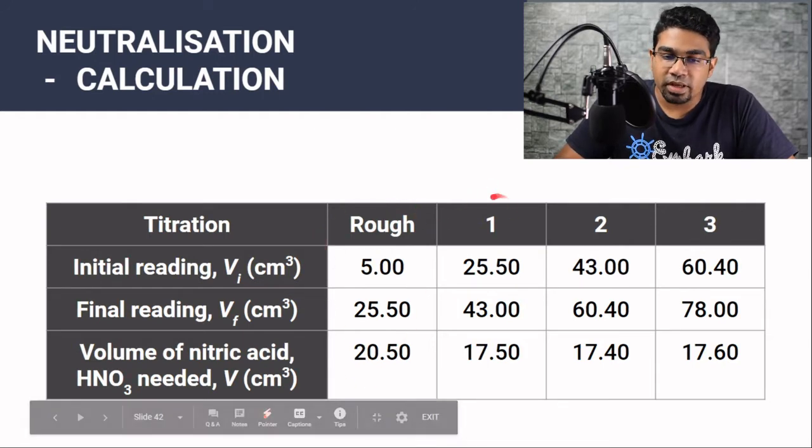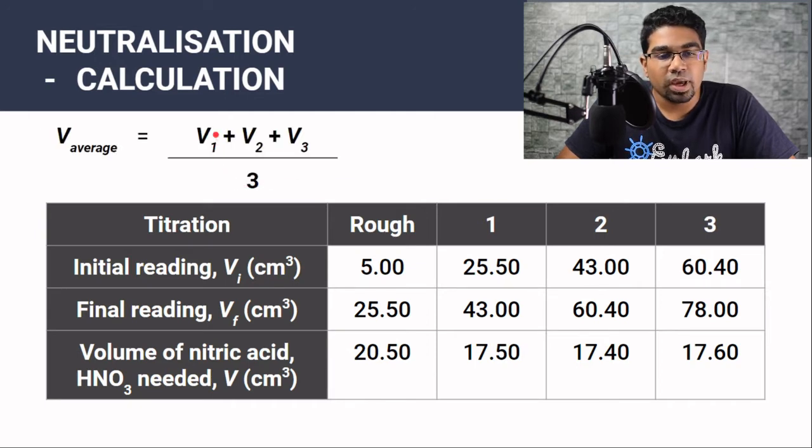Then we have the actual titration. We have three times titration. So when we use the volume of acid that is needed to react completely with the sodium hydroxide solution, here we have to use the average of the three titrations. How we get the average?